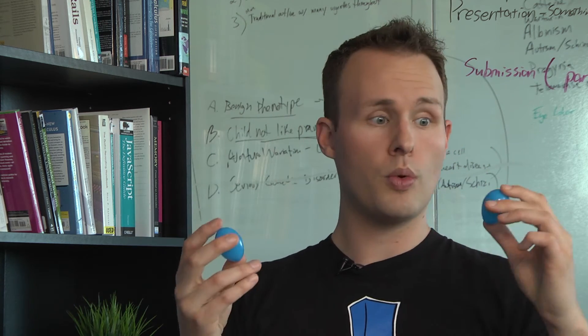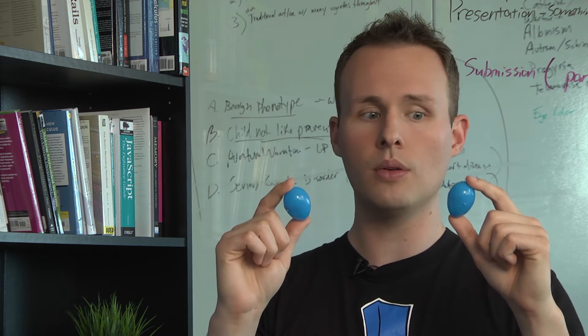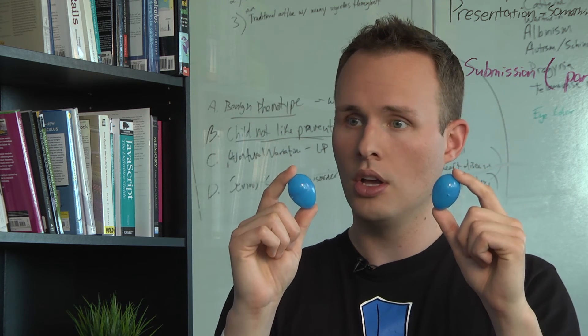We could also do the same experiment with the blue alleles. If you get one blue allele from mom and one blue allele from dad, what color eyes do you think you're gonna have? Blue. You're gonna have blue.